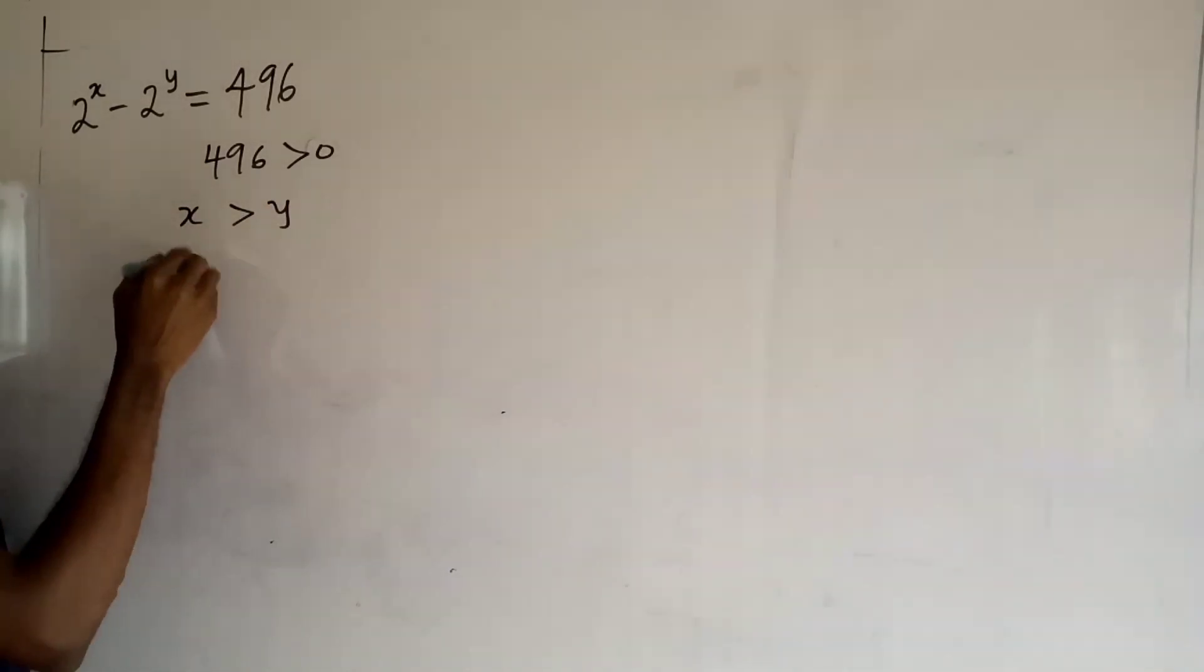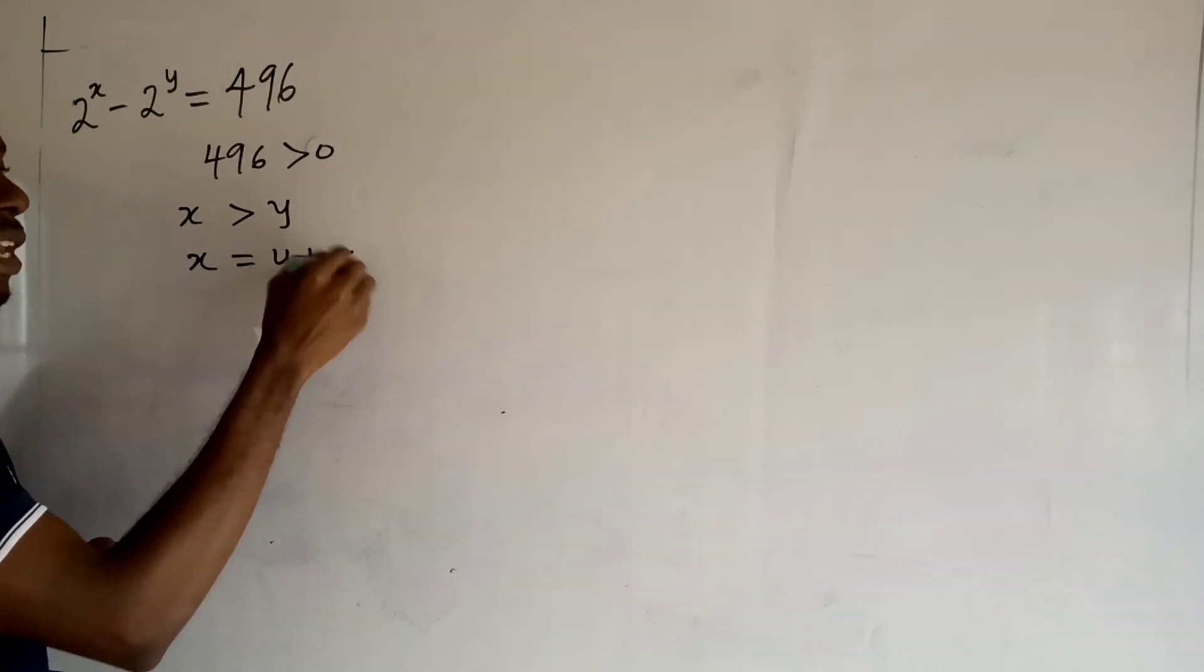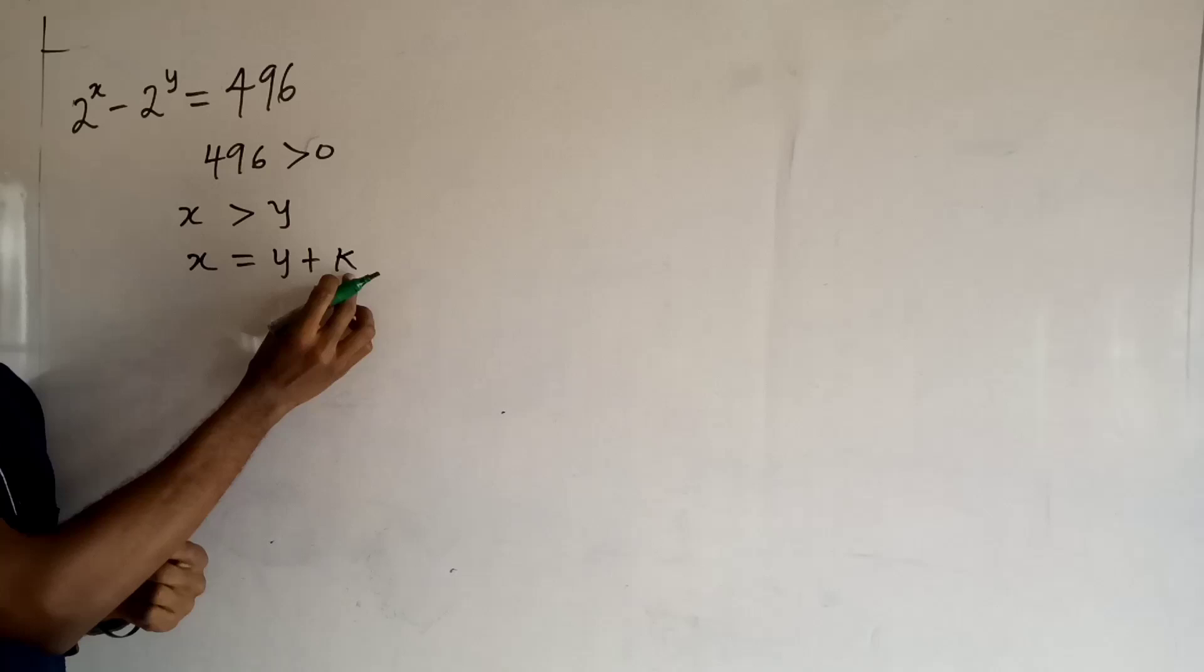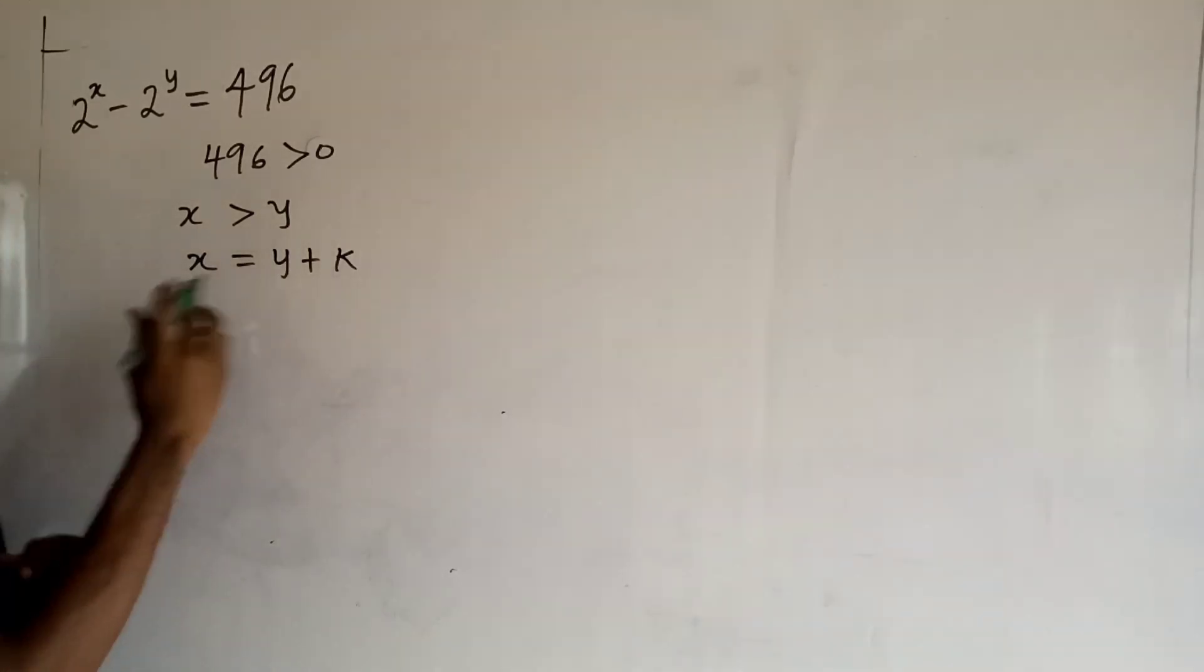So it means that x must be greater than y. And if x is greater than y, that means we can write x in the form of y plus some quantity, say k, where k belongs to the family of the positive integers or natural numbers.